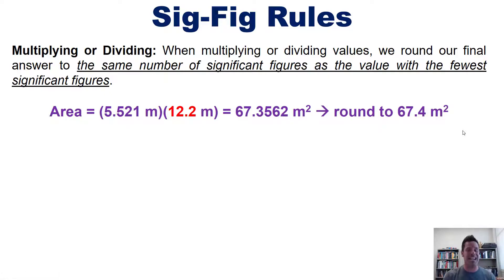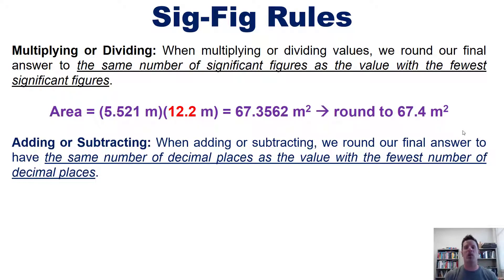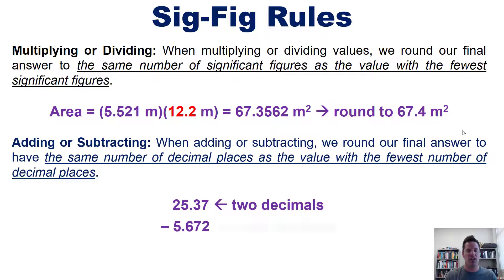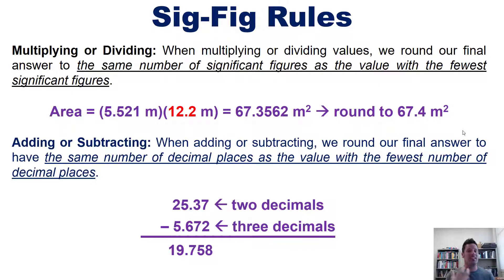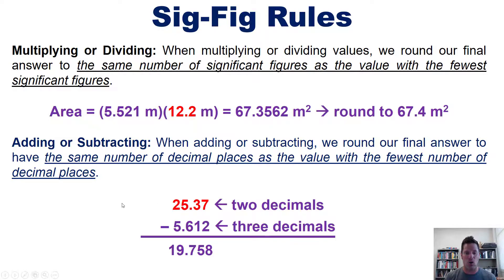This rule contrasts with the adding and subtracting rule. When adding or subtracting, round your final answer to have the same number of decimal places as the value with the fewest decimal places. For example, if you subtract a number with three decimal places from a number with two decimal places, the calculator gives an extended result, but you must round it to only two decimal places — matching the term 25.37 — which gives a final answer of 19.76.